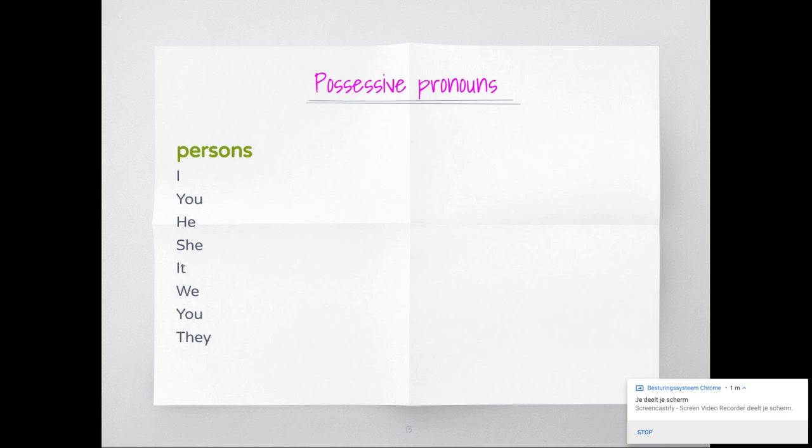Look: I, you, he, she, it, we, you, they. The possessive pronoun plus a noun is my, your, his, her, its, our, your, and their. So my book, your book, his book, and so on. Our books, your books, and their books - plural.